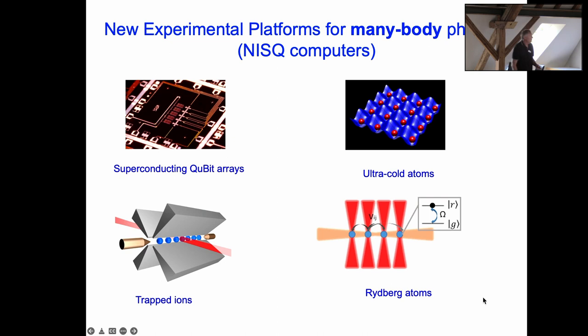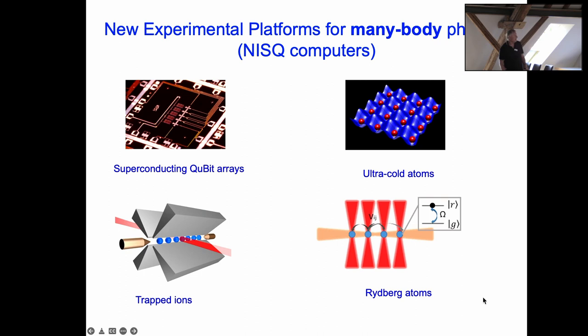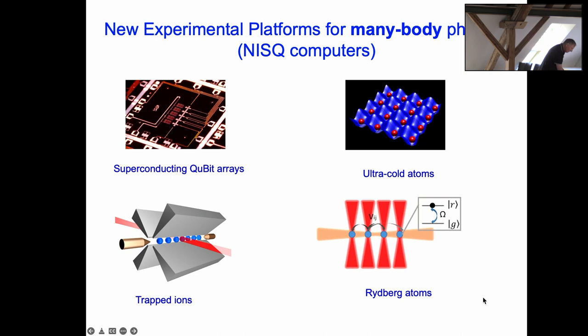Most of us are here because of these new experimental platforms for systems with many qubits, ranging from superconducting qubit arrays to ultra-cold atoms and trapped ions. The latest member of the group are the Rydberg atoms, which I'm no expert in — there are probably experts here, but they seem to be really quite remarkable. These new platforms give new opportunities for quantum many-body theory.